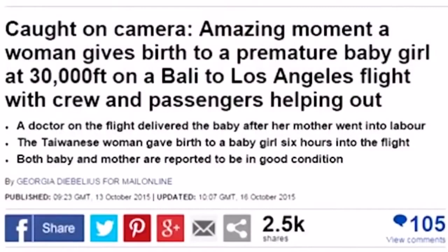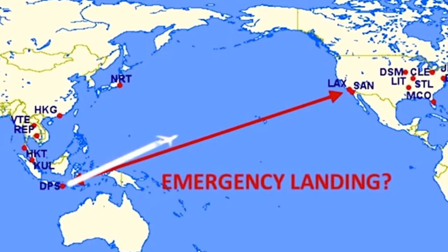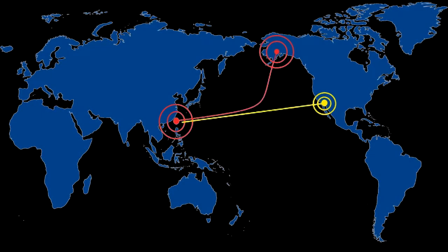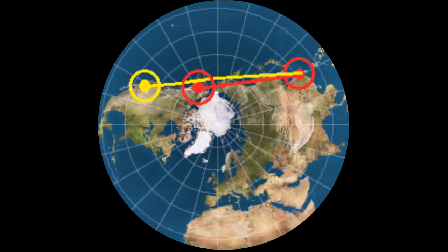One example would be the famous Chinese airline stopover in Alaska for a woman in labor. A baby was born on a flight from Bali to Los Angeles. The pilot made an emergency landing in Alaska instead of continuing to Los Angeles, which on a globe would be the same distance. On a flat earth map it makes much more sense, as shown in this example.